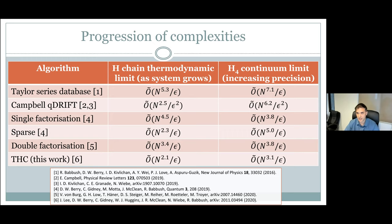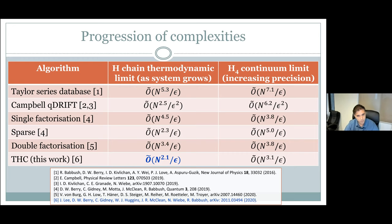There are two distinct cases. The first column is what's called the thermodynamic limit, where you're considering the case as the system is growing — the numerics considered a hydrogen chain. The other case is the continuum limit, where you're considering a single system and increasing N to get higher precision. Our work from 2016 using Taylor series scales like N to the 5.3, whereas the new work using tensor hypercontraction is about N squared, which is a vast improvement and the best out of all prior works. The Microsoft group last year used double factorization, which scales like N to the 3.4, so we get more than a factor of N improvement.